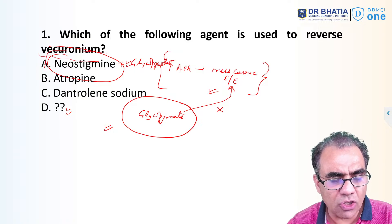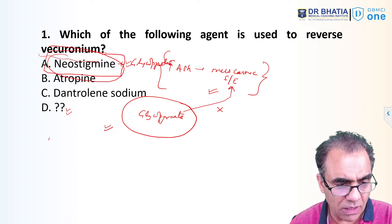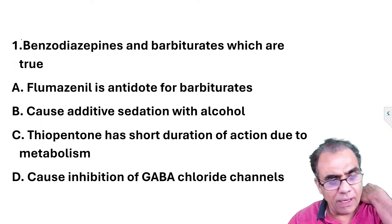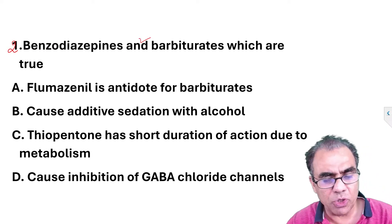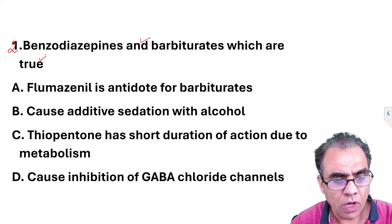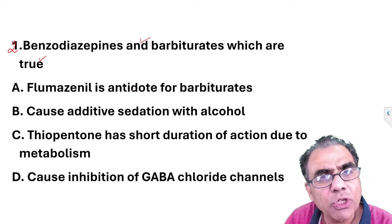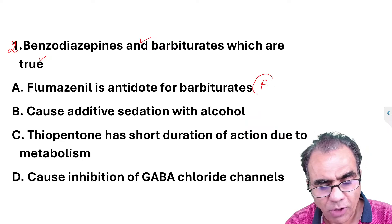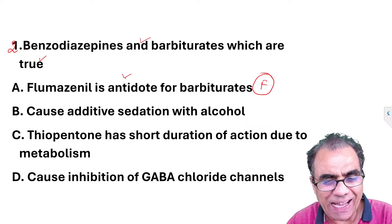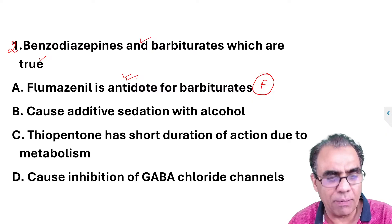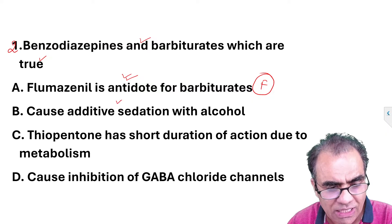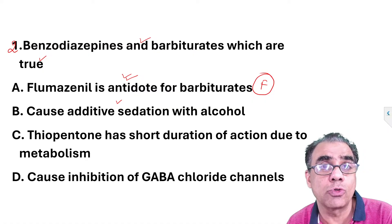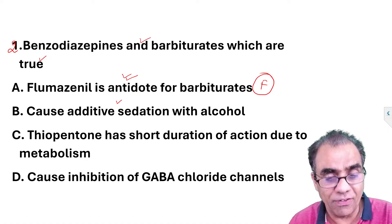The second question is about benzodiazepines and barbiturates. First statement: flumazenil is the antidote for barbiturates — this is false, because flumazenil is the antidote for benzodiazepines, not barbiturates. Second statement: benzodiazepines cause additive sedation with alcohol — this is true; in fact, in certain cases it can be a synergistic reaction, but definitely additive.